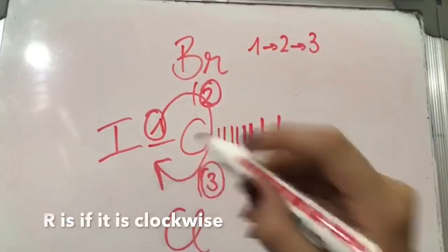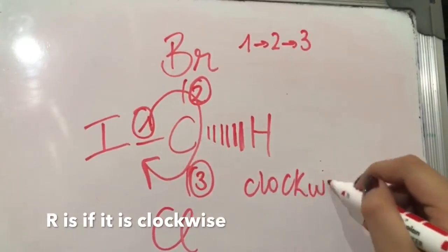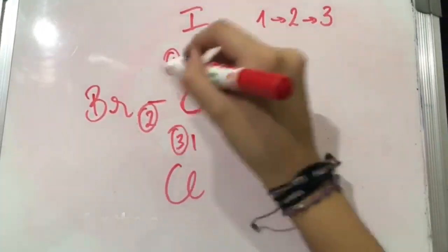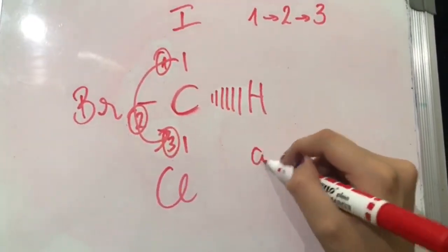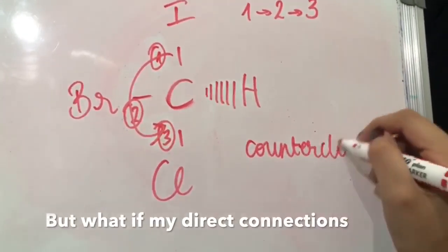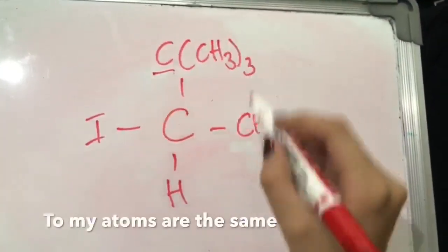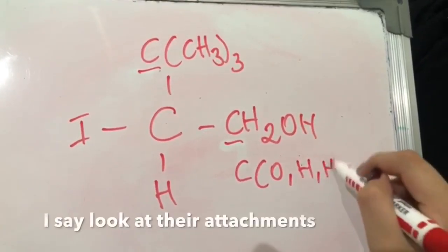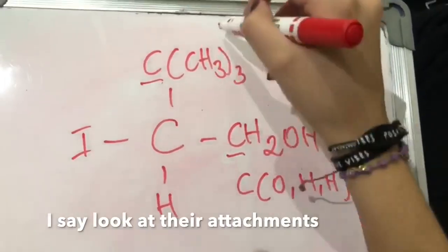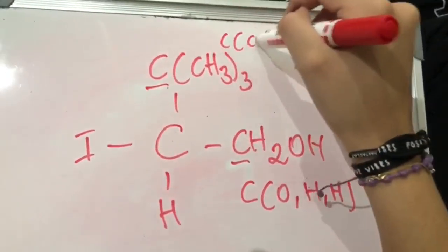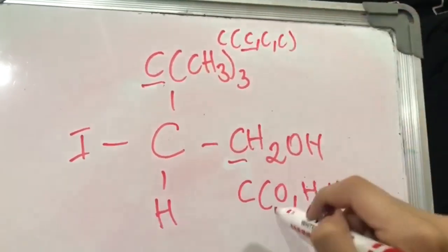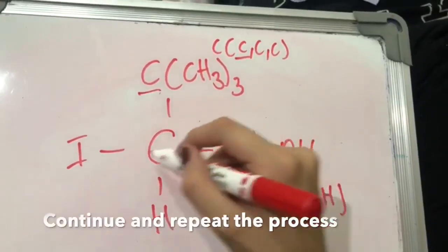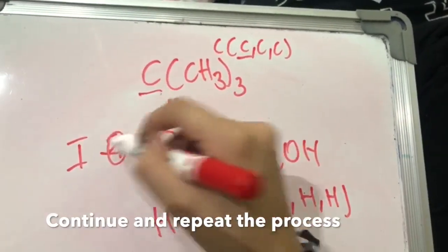Going one, two, and three — if it's clockwise it's R, if it's counterclockwise it's S. What if two of my direct connections, two of my atoms, are the same? Look at their attachments, then you rank them based on those. Continue and repeat the process.